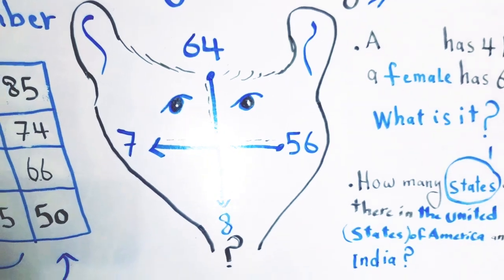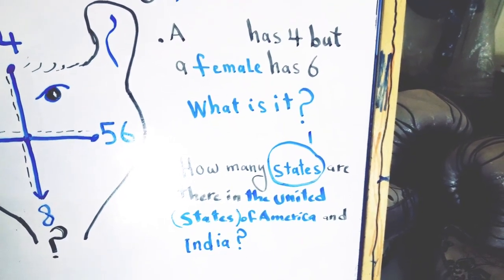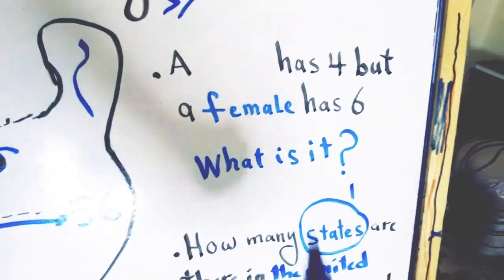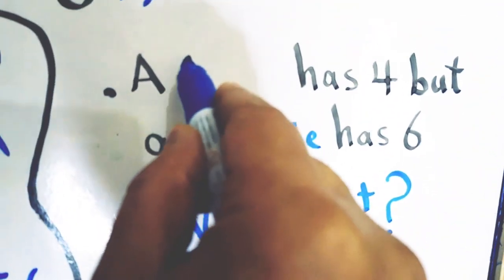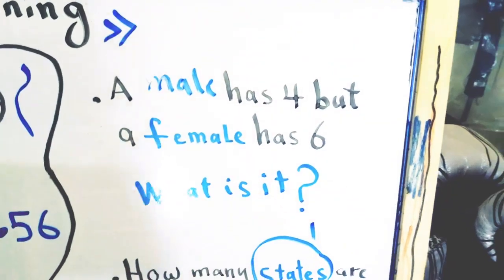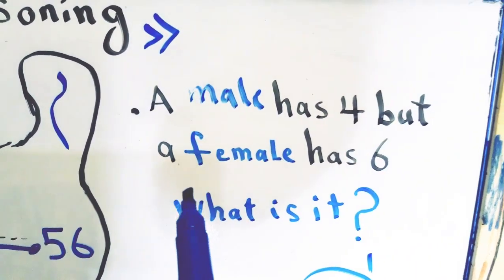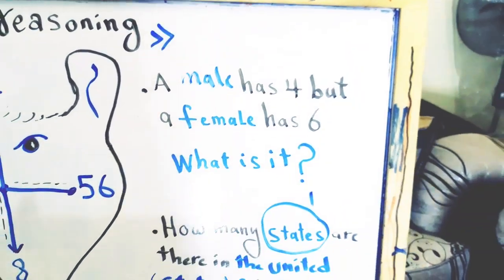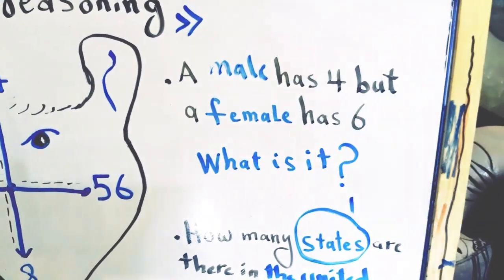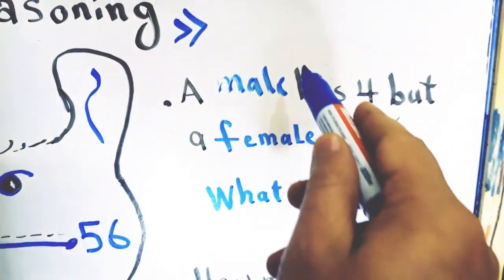Let's look at the third puzzle, where we use our power of observation and magic reasoning to reach the answer. Here is the riddle: a male has four but a female has six — what is it? Please use your power of observation. It's a trick. I'll give you a hint: your power of observation will lead you to the word 'male' and to the word 'female'.